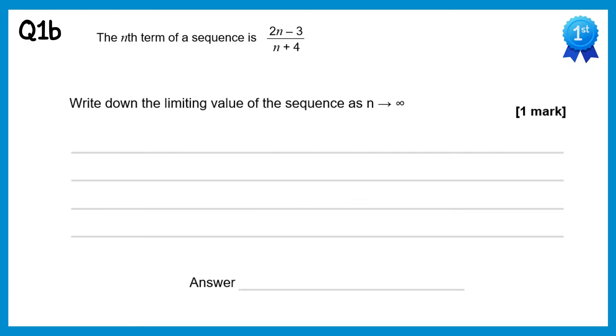Now we need to find the limit of the sequence as n tends towards infinity. If we lose the negative 3 and plus 4, we end up with 2n over n. Cancel the n's and you just get 2.